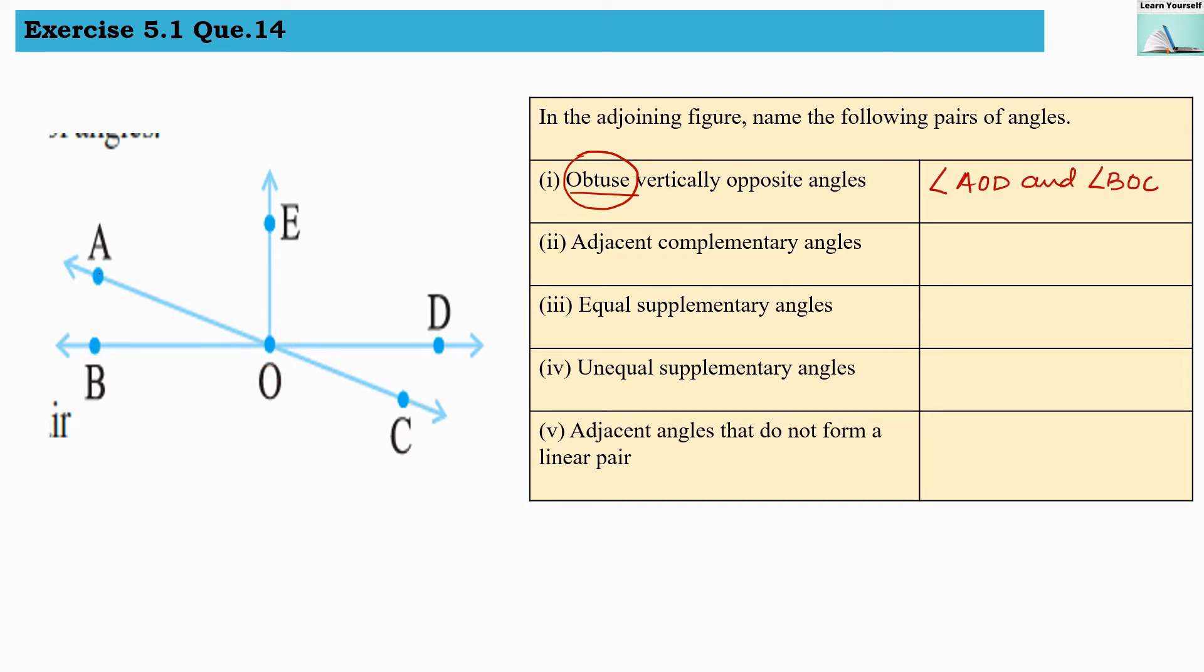Our second question: adjacent complementary angles. Complementary angles means the sum of measures of their angles should be 90 degrees. That means they are complementary angles.